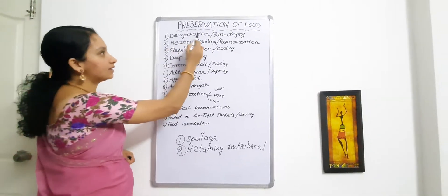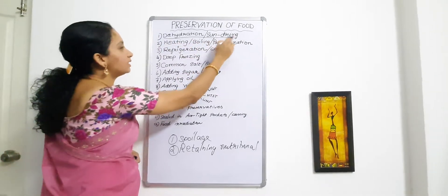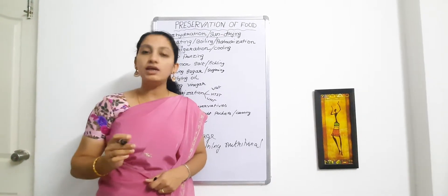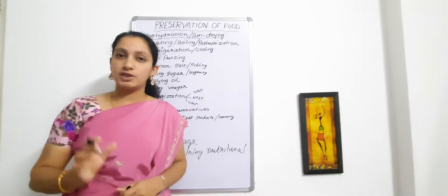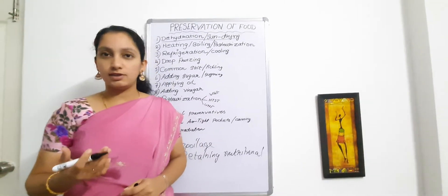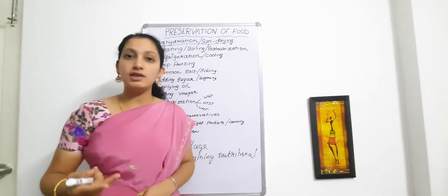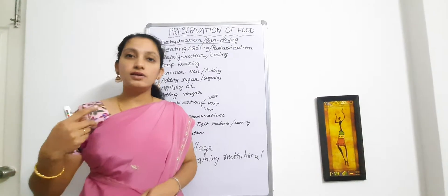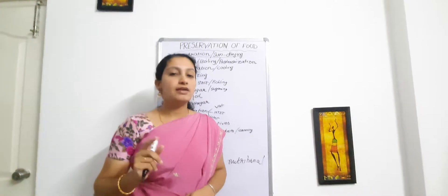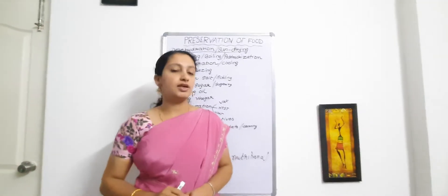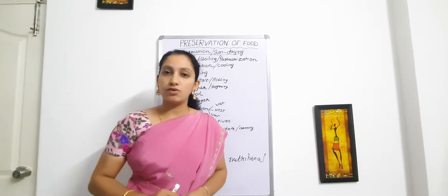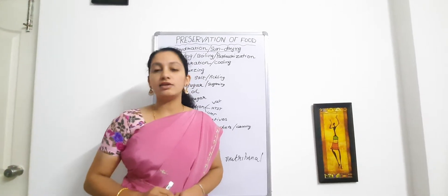The first method is dehydration or sun drying. This is one of the oldest and physical methods, which works by reducing the moisture content present in food. When food like vegetables or other types of food is exposed to sun, the sun's heat reduces the moisture content — that process is called dehydration. This prevents the growth of microorganisms, because microorganisms require some amount of moisture content in food.